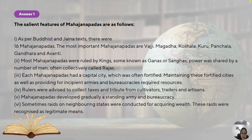Mahajanapadas gradually developed a standing army and bureaucracy. Sometimes raids on neighboring states were conducted for acquiring wealth, and these raids were considered to be legitimate — it was not considered wrong to raid a neighboring state.